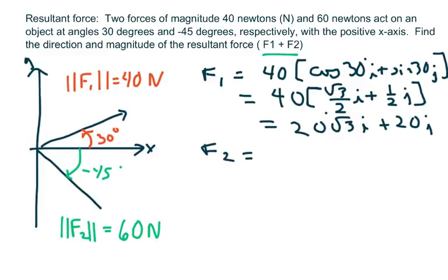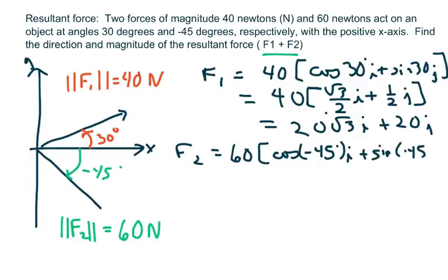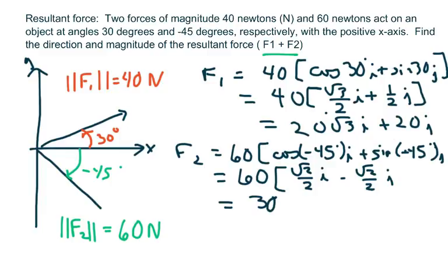Force two equals 60 times cosine of negative 45 degrees i plus sine of negative 45 degrees j. And we're going to get 60 times root two over two i minus square root of two over two j, which equals 30 root two i minus 30 root two j.